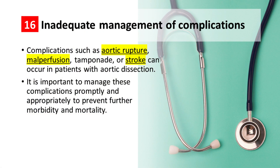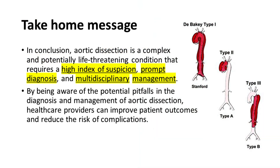Pitfall number 16: Inadequate evaluation and management of complications. Complications such as aortic rupture, malperfusion, or stroke can occur in patients with aortic dissection. It is important to manage these complications promptly and appropriately to prevent further morbidity and mortality. In conclusion, aortic dissection is a complex and potentially life-threatening condition that requires a high index of suspicion, prompt diagnosis, and multidisciplinary management. By being aware of the potential pitfalls in the diagnosis and management of aortic dissection, healthcare providers can improve patient outcomes and reduce the risk of complications.